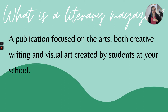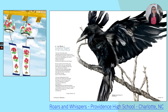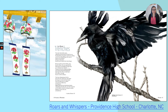But today, since we're focusing on design, we're not going to get too into that. What I wanted to show you is what I mean by focusing on these arts. Here we've got Roars and Whispers from Providence High School in Charlotte, North Carolina. Every year, they make, hands down, one of my favorite literary magazines. Just an example showing you taking a piece of writing by a student — in this case, it's a poem entitled In These Trenches — and coupling it together with a piece of art, a colored pencil drawing entitled Harbinger.